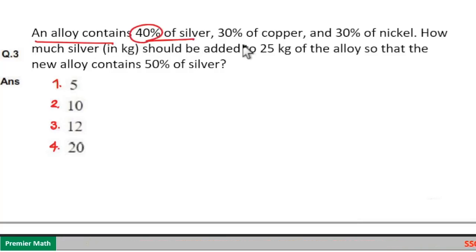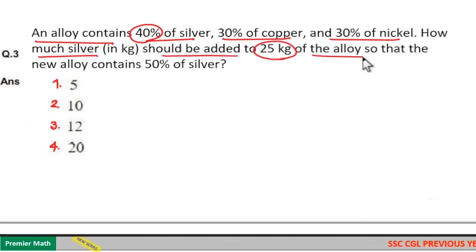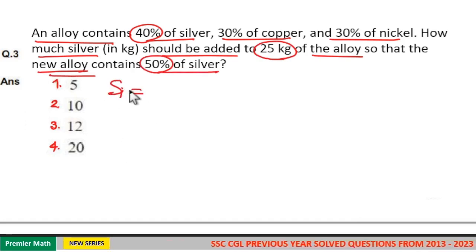An alloy contains 40% silver, 30% copper, and 30% nickel. How much silver should be added to 25 kg of the alloy so that the new alloy contains 50% silver? Here, initially the silver amount in this alloy...